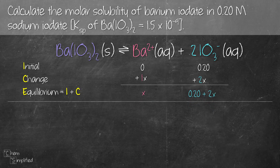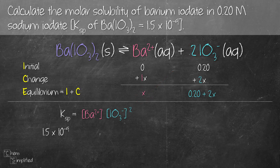We're now ready to find the molar solubility. We write out the Ksp expression: Ksp is the solubility product constant, which is the product of the concentrations of the two ions — Ba2+ and iodate. Don't forget that the 2 in front of iodate means we raise it to the power of 2 because of that coefficient. We plug in Ksp = 1.5 × 10⁻⁹, then x for barium ion, and (0.20 + 2x)² for iodate ion. Don't forget to square that entire expression.